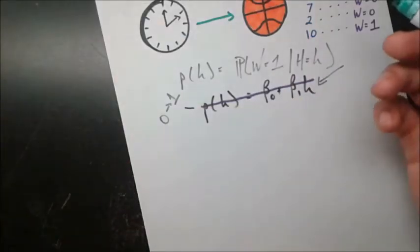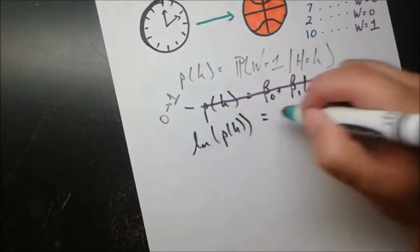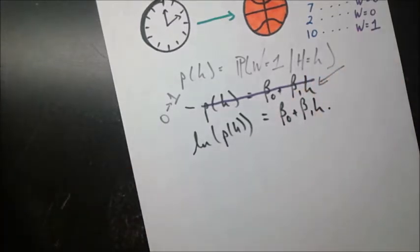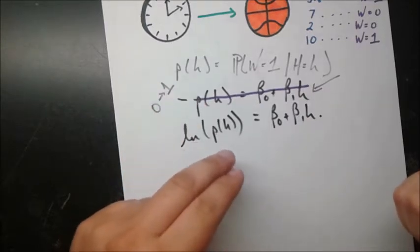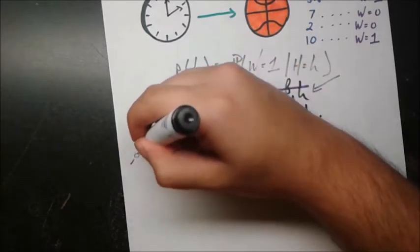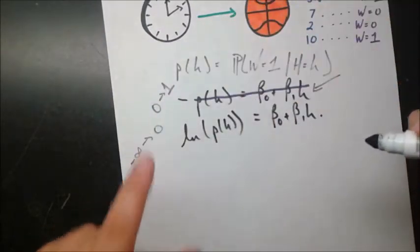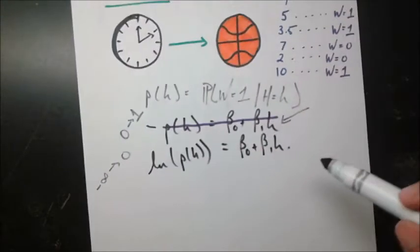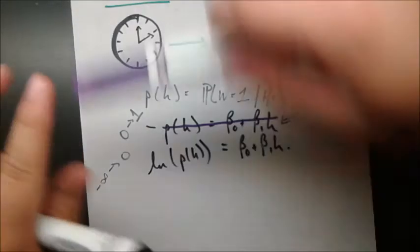Maybe one transformation we could do is take the log of the left-hand side: natural log of P of H equals beta naught plus beta 1 H. Now, P of H takes values between 0 and 1, so ln of P of H goes from negative infinity to 0 — it's bounded on the right-hand side by 0 but unbounded on the left. Since this linear function is unbounded on both sides, there's a mismatch, so we're going to have to rule this model out as well.